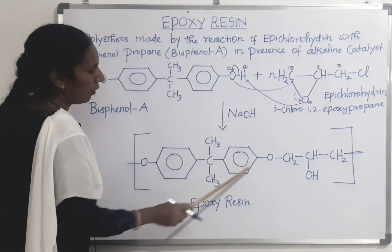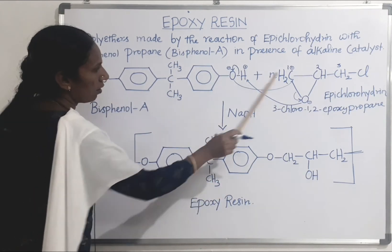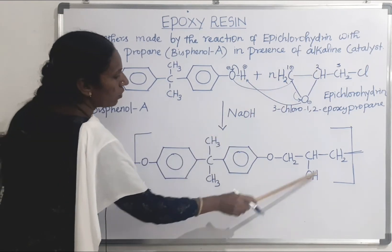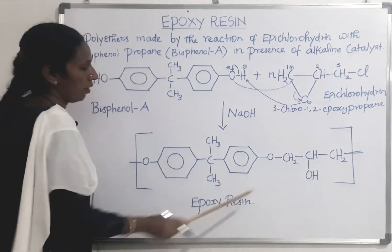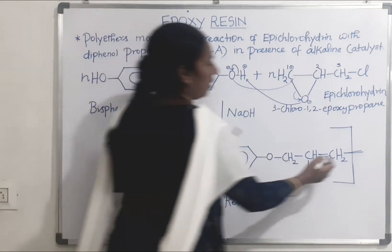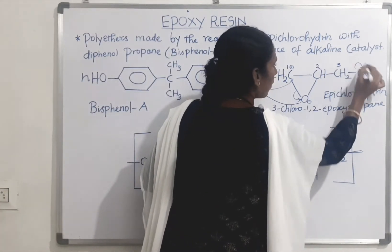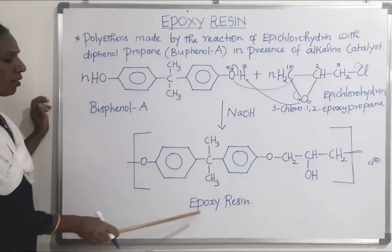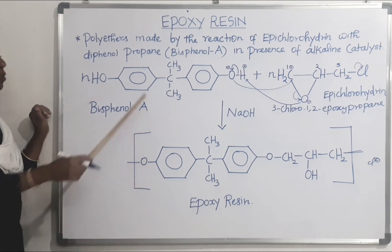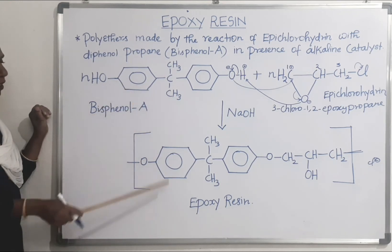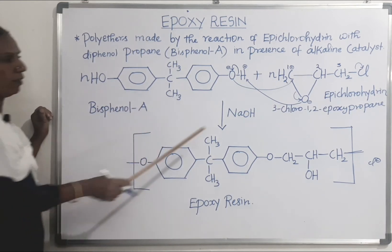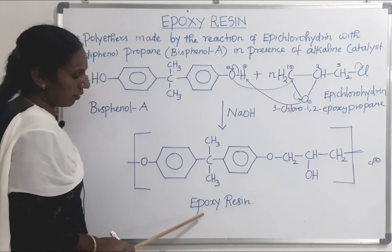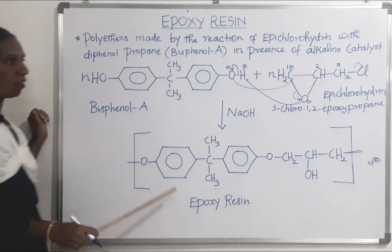Here the phenoxy group oxygen is bonded with the CH2 group, then CHOH-CH2 — the hydroxy group is obtained. The polymer is obtained here; the Cl is removed as Cl minus. So the product is epoxy resin. The bisphenol A reacts with epichlorohydrin in the presence of sodium hydroxide and we obtain the product, that is epoxy resin — the polymer is obtained.